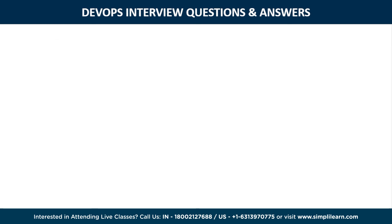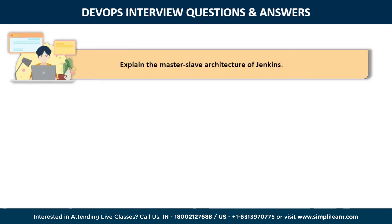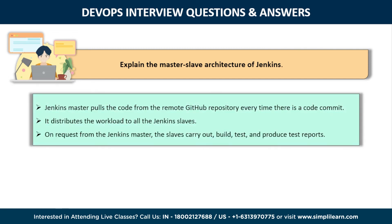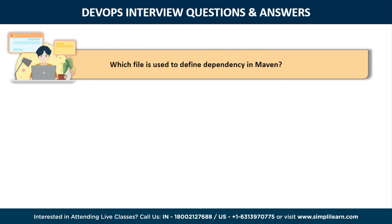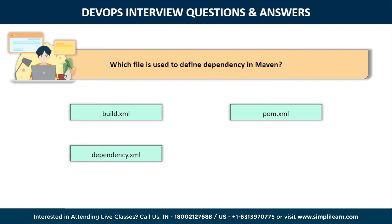The next question is: explain the master-slave architecture of Jenkins. Jenkins master pulls the code from the remote GitHub repository every time there is a code commit. It distributes the workload to all Jenkins slaves, and when requested from the Jenkins master, the slaves carry out build and test tasks and produce test reports. Next question: which file is used to define dependency in Maven? The correct answer is pom.xml.